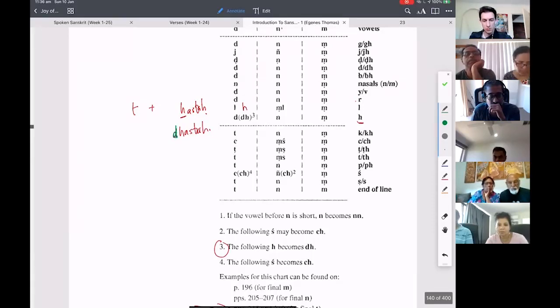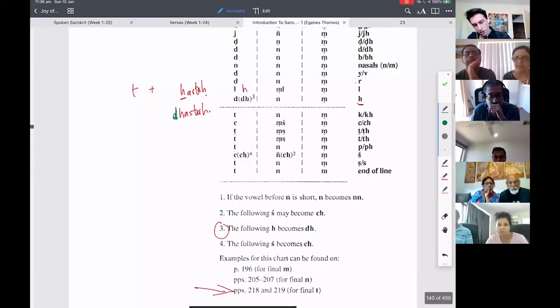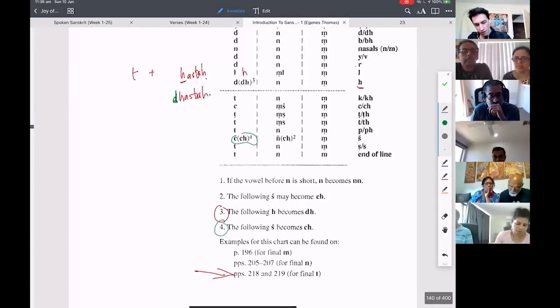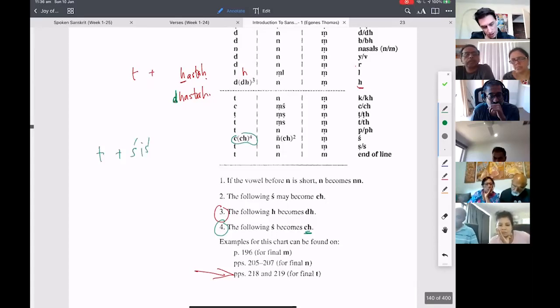So that's one of the exceptions, and there's also an exception here. Exception number four - the following SH becomes a CH. So Shisha, T plus Shisha, Ramad Shisha will be Ramach Shisha.